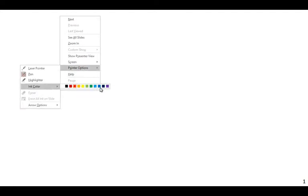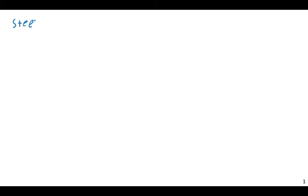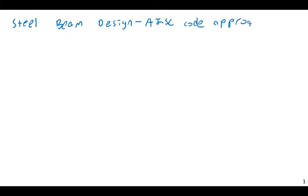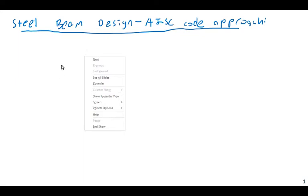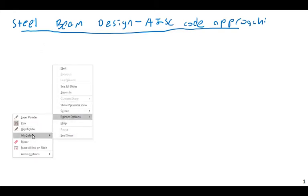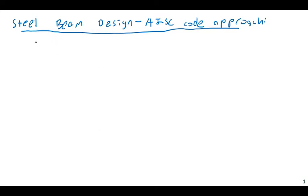Let's start looking at a code approach to steel beam design — the AISC code approach. The guiding chapter for this, if you want to go to page 16.1-44 in your AISC manual (assuming the 15th edition), is Chapter F. Chapter F covers beam design or flexural design — specifically, design of members for flexure.